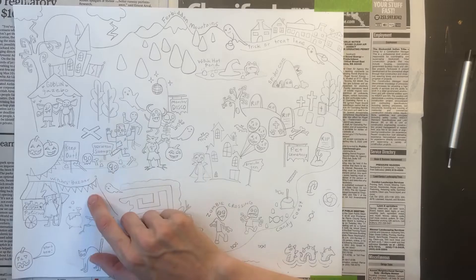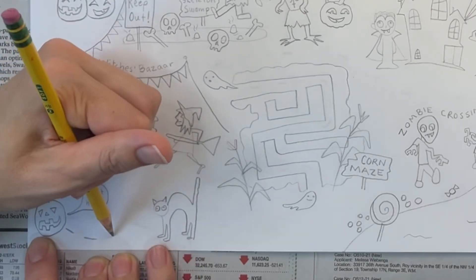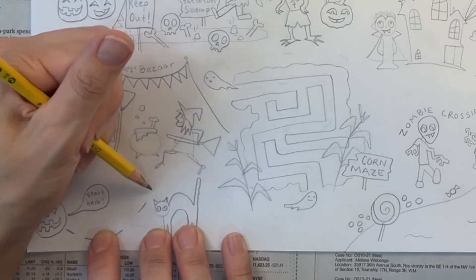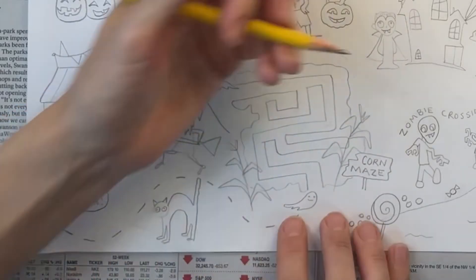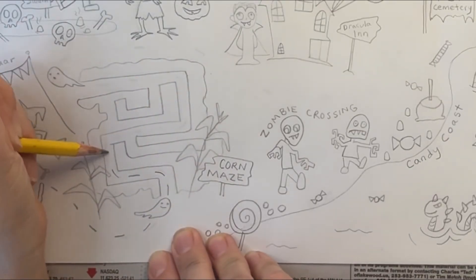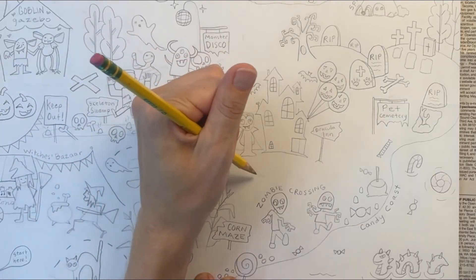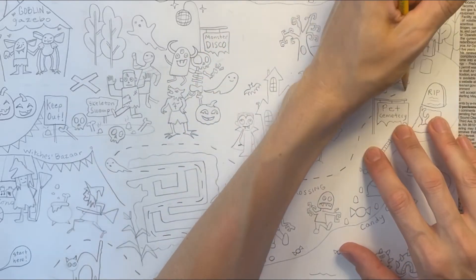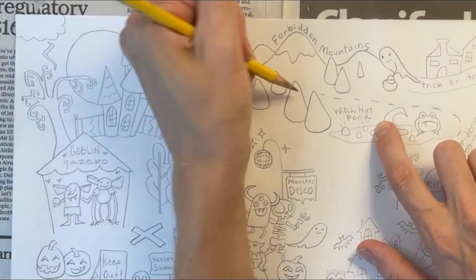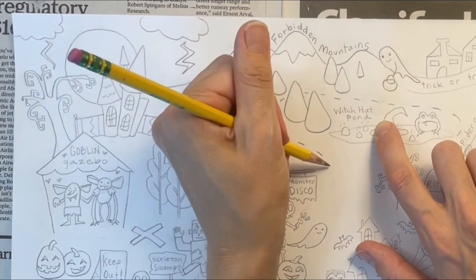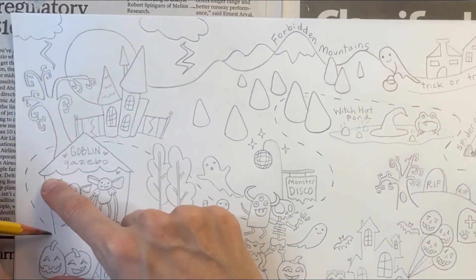Now I'm going to create a route that leads to the treasure. I'm going to start at my jack-o'-lantern in the bottom left-hand corner. I don't want to make a direct path to the treasure. That would be too easy. I want the treasure hunter to have to travel all over the place to find it. So I'm making these little dash marks that travel through my corn maze and then weave all around the picture, right next to the zombies and through the Pet Cemetery, in front of the spider cave, behind Witch Hat Pond, through the candy corn forest, past the Monster Disco, in front of the Cobweb Castle and around the Goblin Gazebo to get to the treasure.